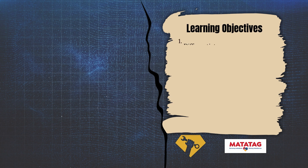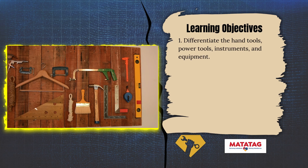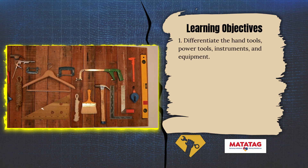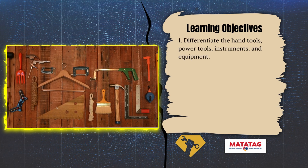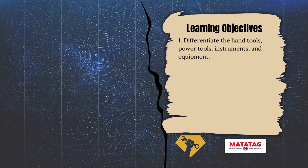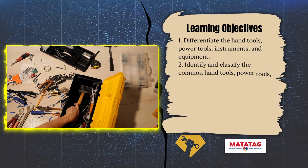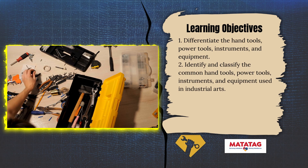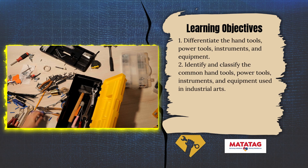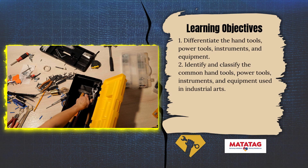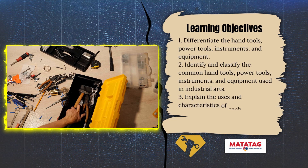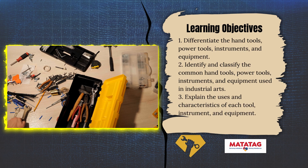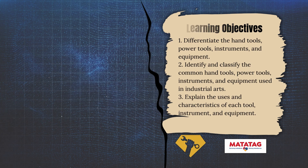Number one, differentiate the hand tools, power tools, instruments, and equipment. Number two, identify and classify the common hand tools, power tools, instruments, and equipment used in industrial arts. Number three, explain the uses and characteristics of each tool, instrument, and equipment.